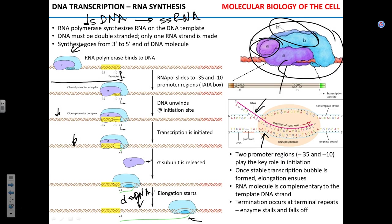There are two important regions in the promoter: the negative-35 and negative-10 regions. These parts of the promoter are very rich in T's and A's. For instance, the sequence at the negative-10 position is TATA. 'Negative 10' means 10 nucleotides before the actual start of the gene.